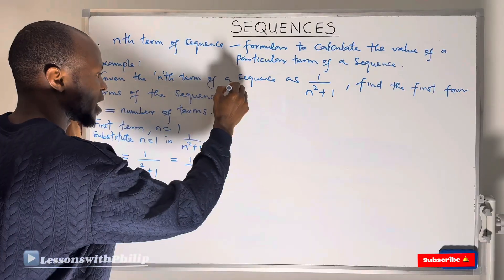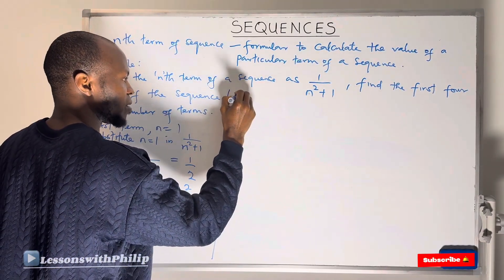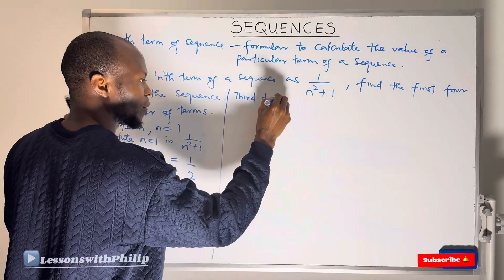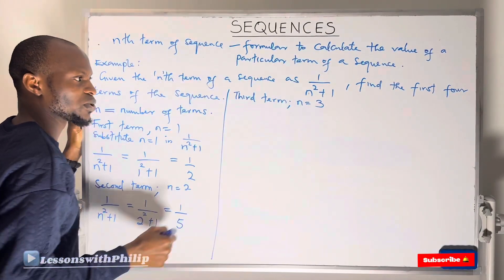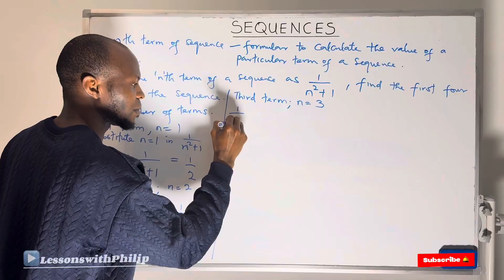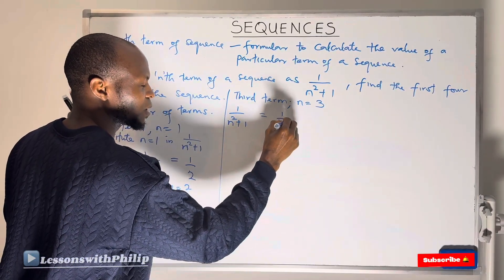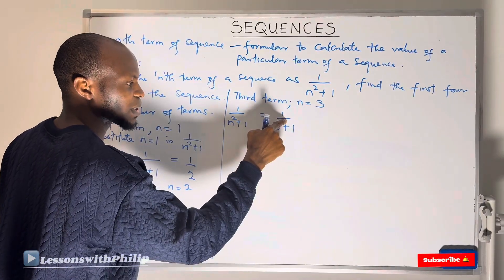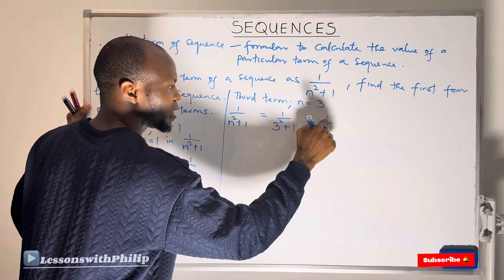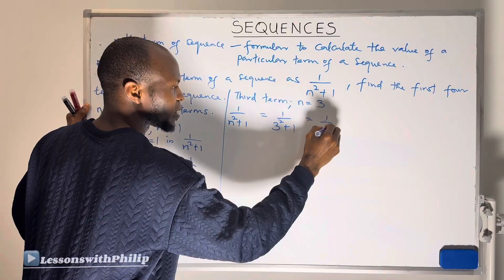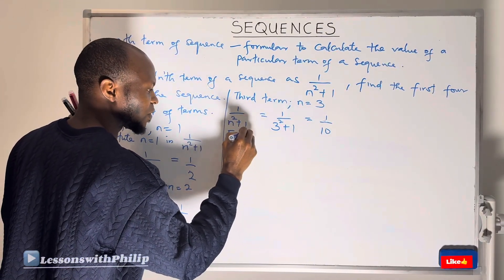For the third term, N = 3. Substituting into the formula: 1 over (3² + 1) = 1 over (9 + 1) = 1 over 10. So the third term is 1/10.